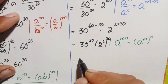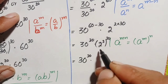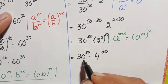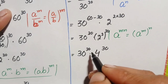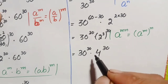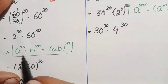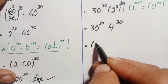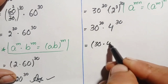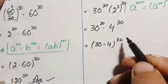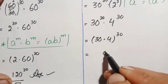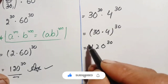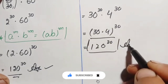This gives us 30 raised to power 30 times 2 raised to power 2, all raised to power 30. Since 2 raised to power 2 is 4, this becomes 30 raised to power 30 times 4 raised to power 30. These two numbers have the same power, so we multiply the bases: 30 times 4 equals 120, giving us 120 raised to power 30. So the answer using our second method is also 120 raised to power 30.